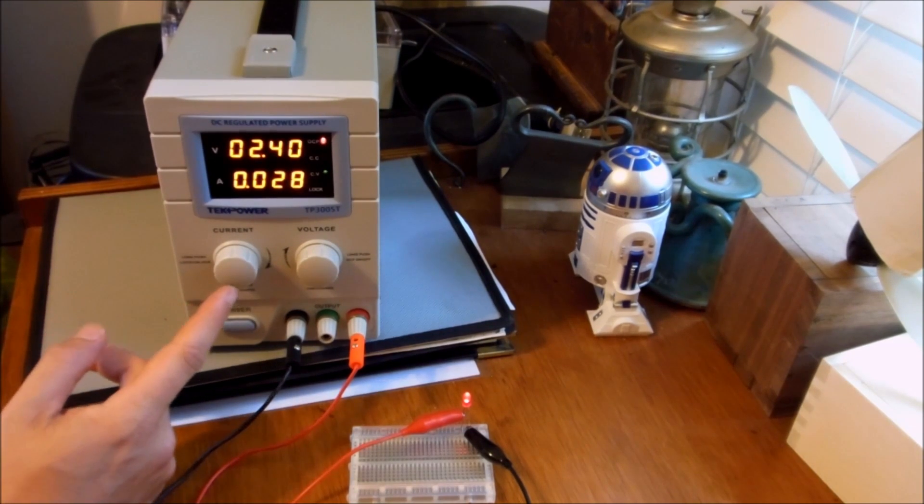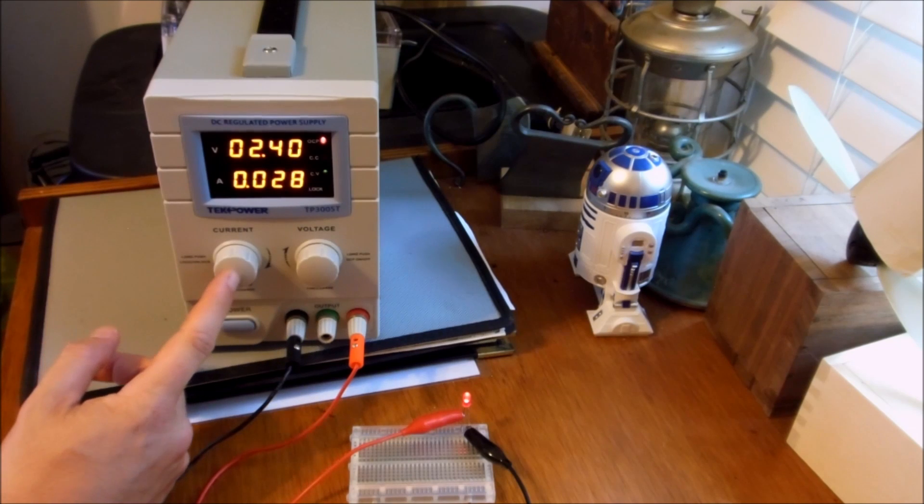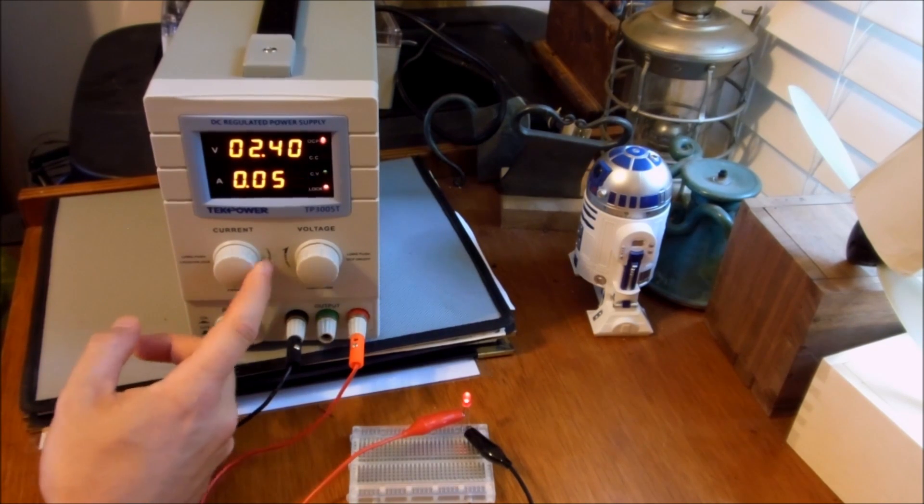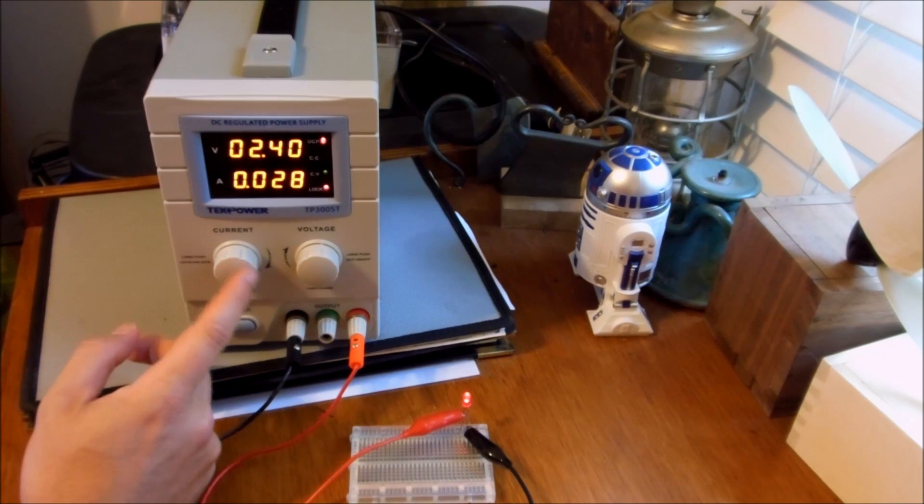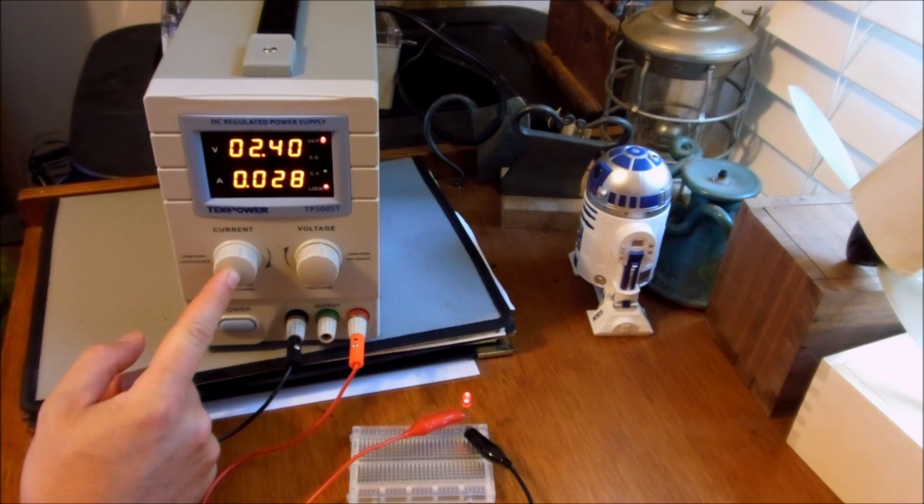You can actually lock by holding down this current button. It locks, and so I think that means you can't change anything by turning the knobs, voltage, or the amperage. I'm going to turn that lock off.